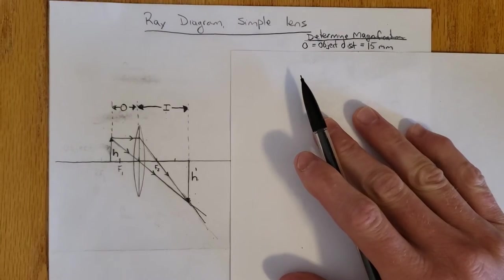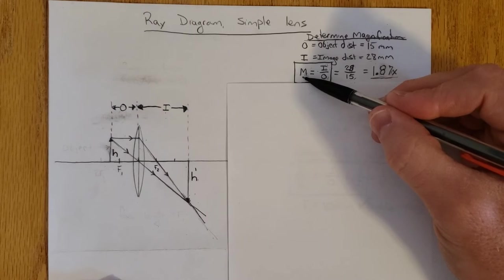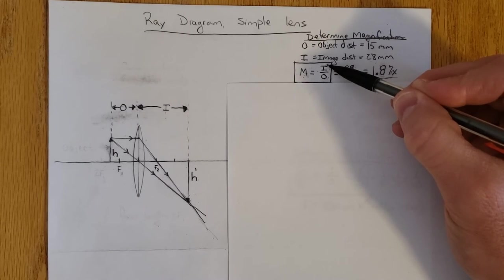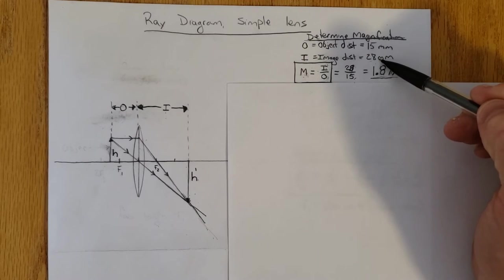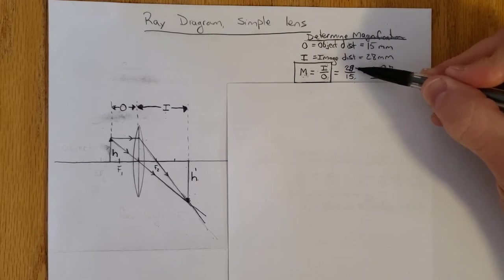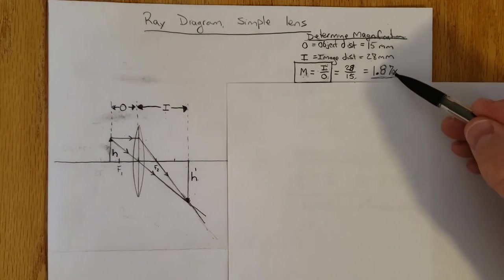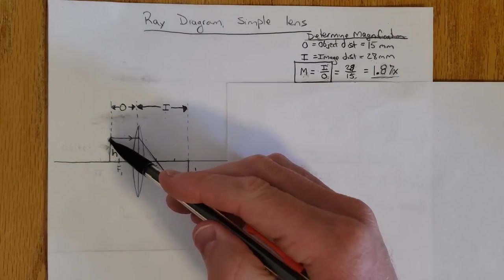My first simple lens formula is M equals magnification, equal to the image distance divided by the object distance. I've already measured my image distance to be 28 millimeters. So magnification is 28 millimeters divided by the 15 millimeter object distance, and that means that this height is about 1.87 times the object height.